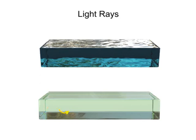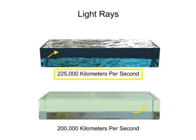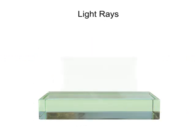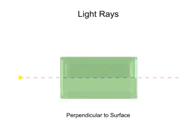For glass it's reduced to 200,000 kilometers per second, and for water the speed is 225,000 kilometers per second. If the light enters into a medium perpendicular to the surface, it passes straight through but at a slower speed.